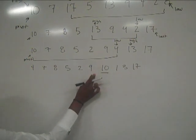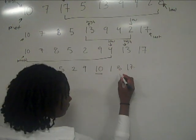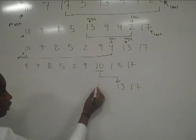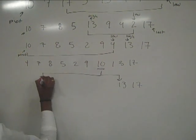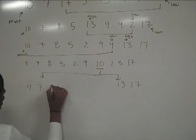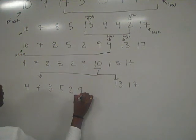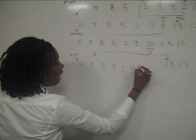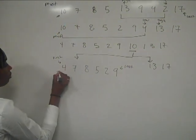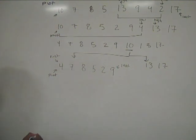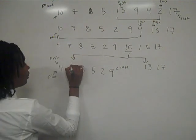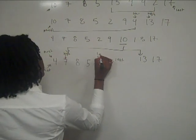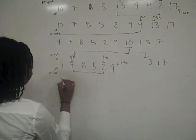You then divide these two different lists of numbers. From here, you have 13 and 17, which are already sorted, so you don't need to do anything with those. Now you have 4, 7, 8, 5, 2, and 9. Again, you have your first and last value. Your pivot is going to be 4. You look for the first value greater than 4 from the left, which is 7 — this is your high. The first number less than 4 from the right is 2. You then swap these values and rewrite.